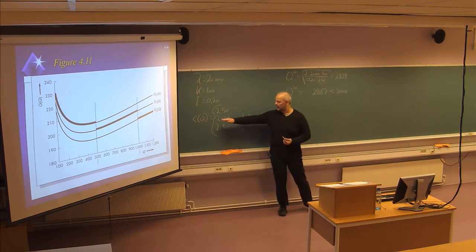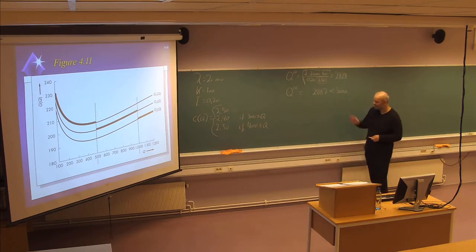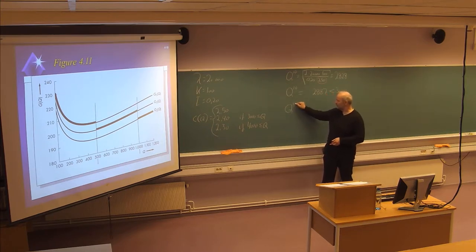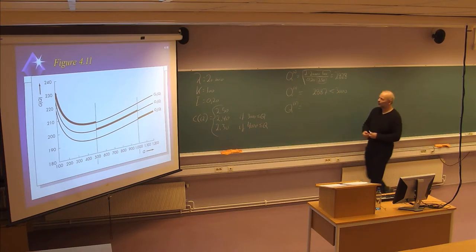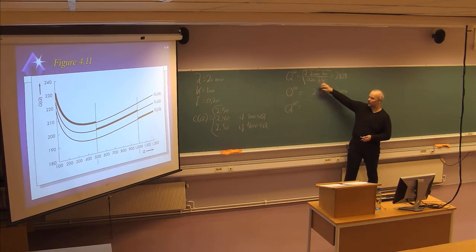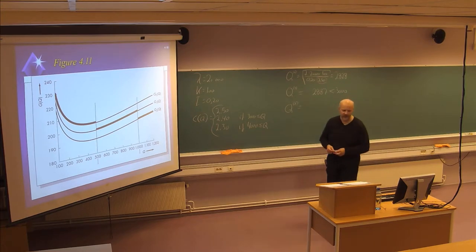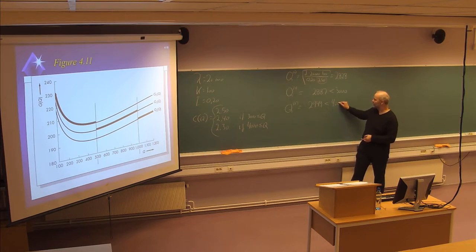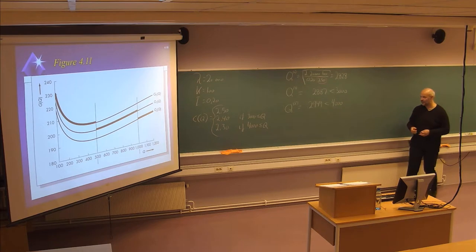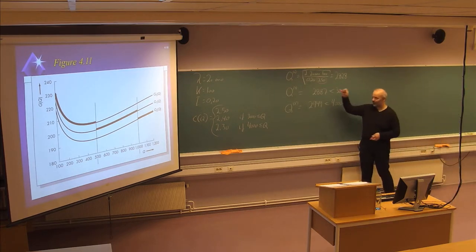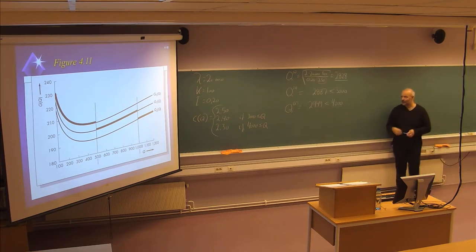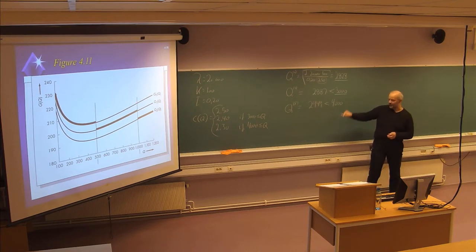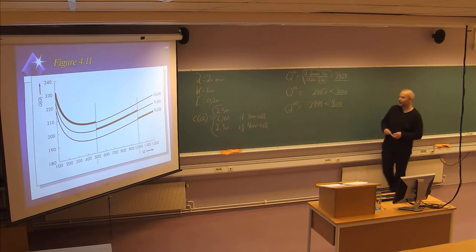So the three possible optimal order sizes are: 2,828 units at $2.50 (first vendor), 3,000 units at $2.40 (second vendor), or 4,000 units at $2.30 (third vendor). We now need to compare the costs using the total cost function, which includes annual ordering cost (λ/Q × K), holding cost (Q/2 × C × i), and annual purchase cost (λ × C), since the price per unit varies with order size.